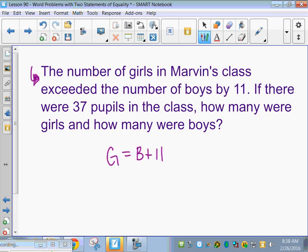There were 37 pupils in the class. So Sophie, what could I write for this equation? It's just the total number of boys plus the total number of girls equals 37.